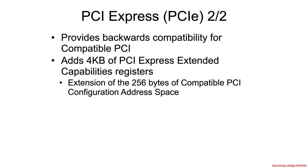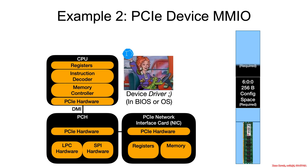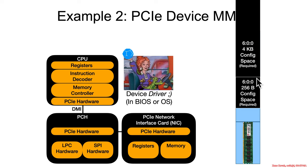The one big difference that we're going to care about is that PCIe adds a four kilobyte extended address space. The PCI configuration address space is extended from 256 bytes to four kilobytes — you extend that up to being four kilobytes instead of just 256 bytes.